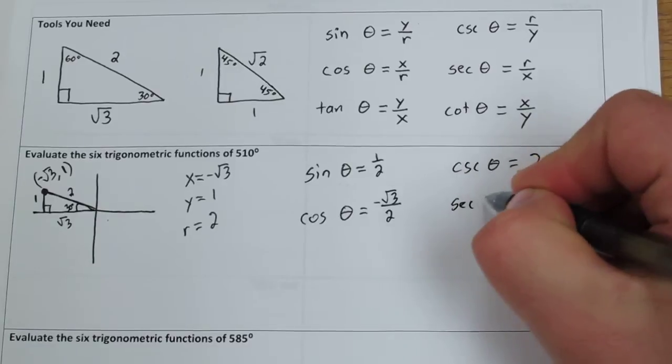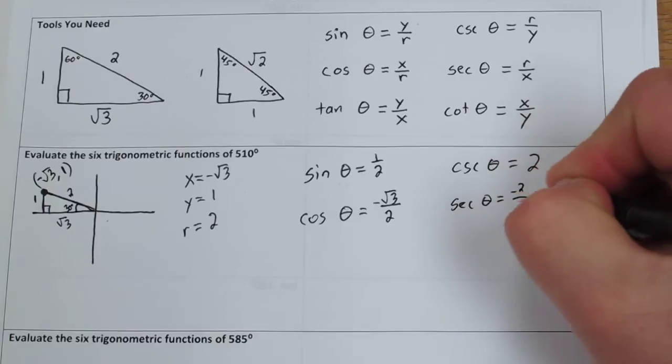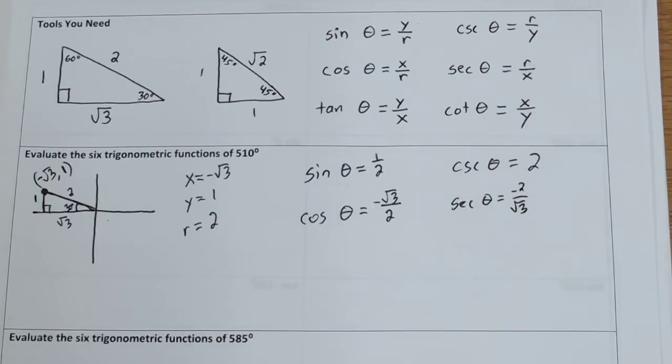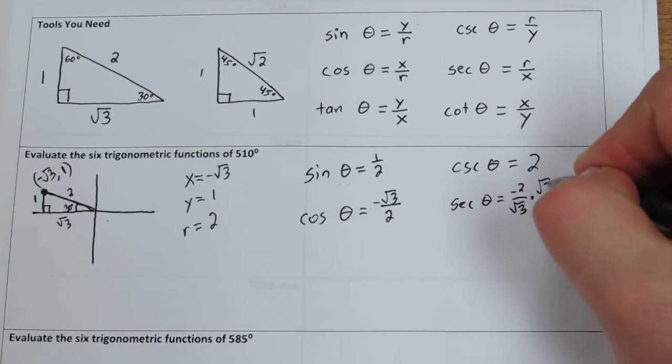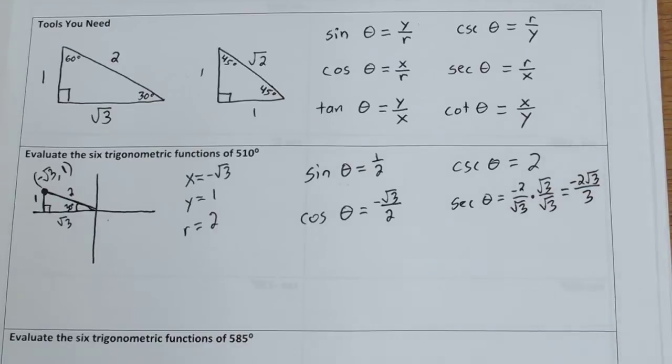Notice this is going to end up with a radical in the denominator, so we have to rationalize it. We multiply it by rad 3 over rad 3, and it ends up being negative 2 rad 3 over 3.